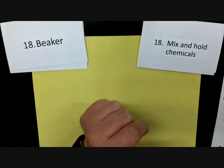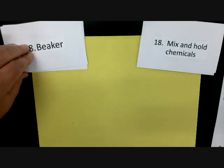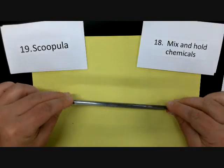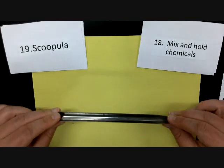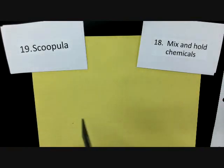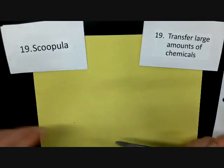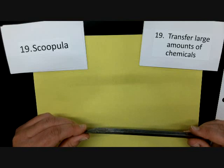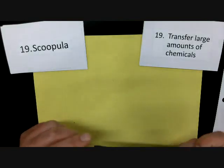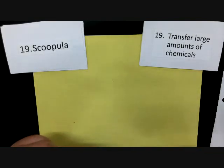The next one is another tool to transfer chemicals. The spatula moves small amounts, but this is called a scoopula — one of my favorite names. It looks like a little half pipe. The technical definition is that it's used to transfer large amounts of chemicals. If you need like five grams you'll use a scoopula since it goes fast; if you only need half a gram then the spatula would suffice.